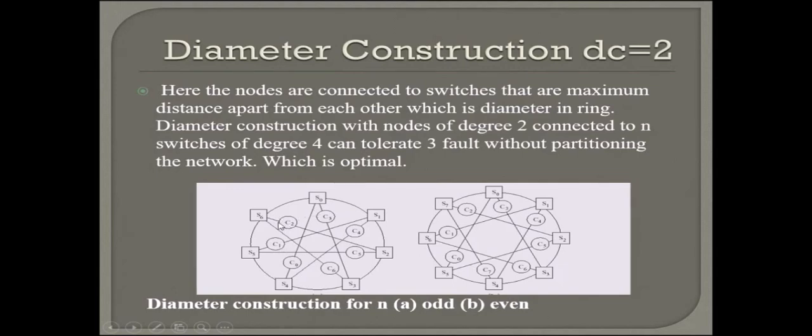Diameter construction with nodes of degree three to n switches, or degree four. This can tolerate three faults without partitioning the network, which is optimal.